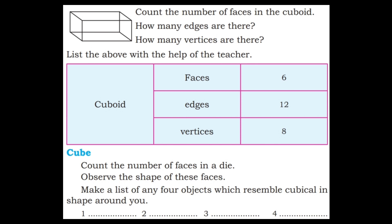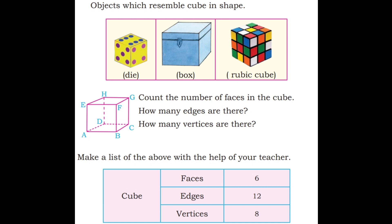Cube. Count the number of faces in a die. Observe the shape of these faces. Make a list of any four objects which resemble a cube in shape — for example, ice cube, die, puzzle cube, Rubik's cube. Objects which resemble a cube in shape: die, box, and Rubik's cube. A cuboid and a cube have the same number of faces, edges, and vertices.